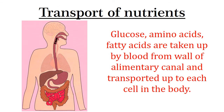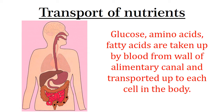The second function is transport of nutrients. Simple nutrients like glucose, amino acids, and fatty acids are taken up by blood from the wall of the alimentary canal and transported to each cell in the body. The alimentary canal is the whole passage along which food passes.